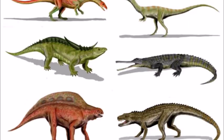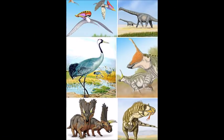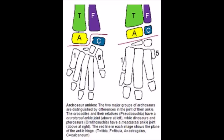Archosauria then splits into a number of lineages, including Pseudosuchia — we talked about these in Stasis — and Avemetatarsalia. The latter group is characterized by having a very different ankle joint compared to the Pseudosuchians and other archosaurs. Pseudosuchians have a crurotarsal ankle with a ball socket-like joint between the astragalus and calcaneum that causes the feet to swivel outwards while walking. Avemetatarsalians have an advanced mesotarsal ankle with a large astragalus, small calcaneum, and a simple hinge joint between the metatarsals and the former two bones.